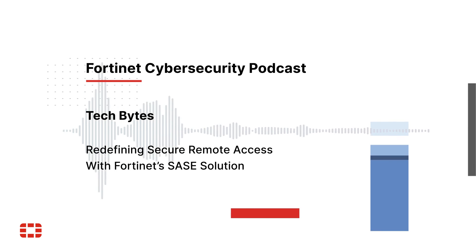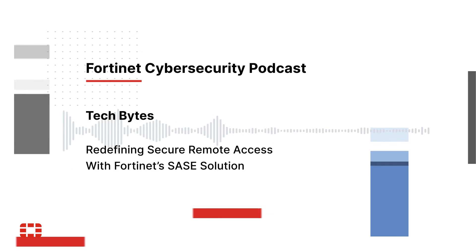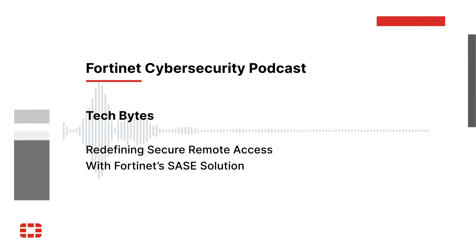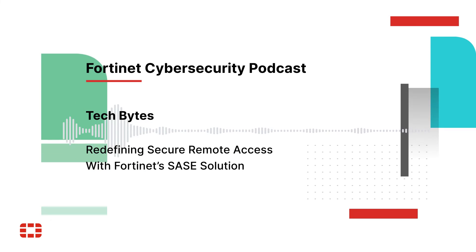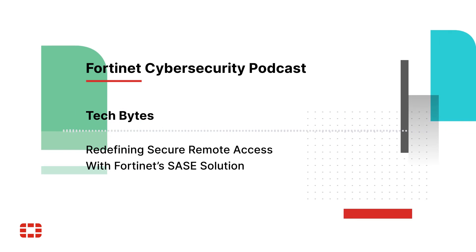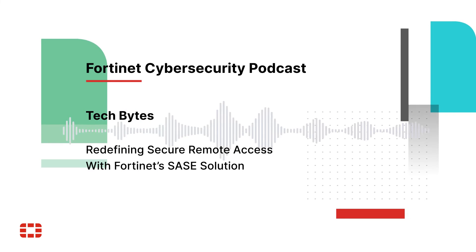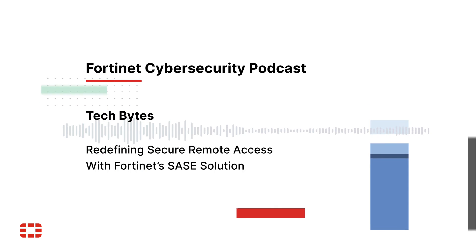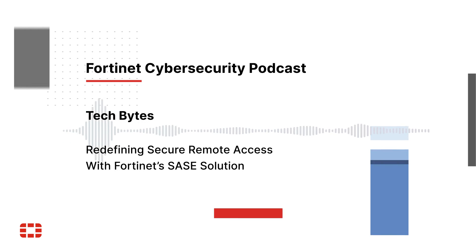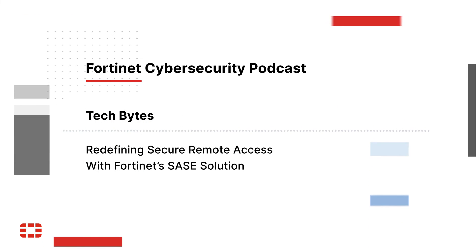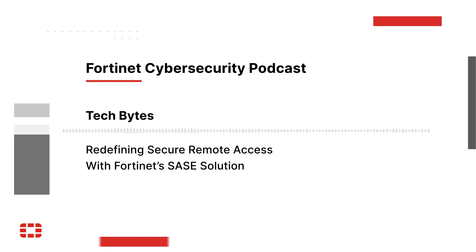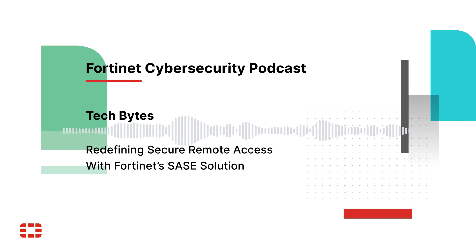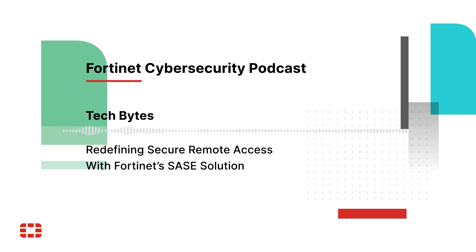Is that where the ZTNA element comes in? One of the known drawbacks with traditional IPsec VPN is that once you're on the network, you're on the network. ZTNA provides a higher degree of filtering in terms of the applications and services you can actually access. ZTNA is one of the biggest use cases in SASE conversations, because it allows users to have explicit access only to that specific app. More importantly, we are doing continuous verification of that user — so even if something happens and the device becomes vulnerable, we will terminate that connection.